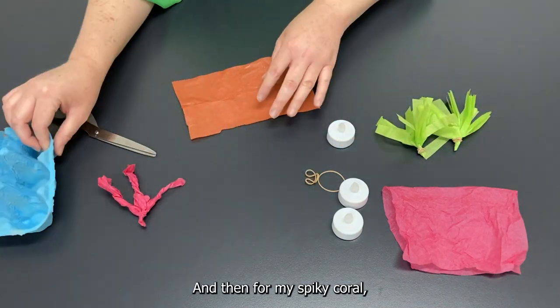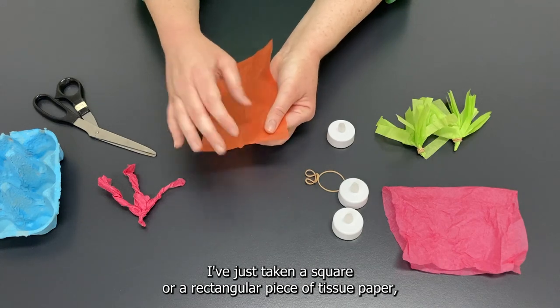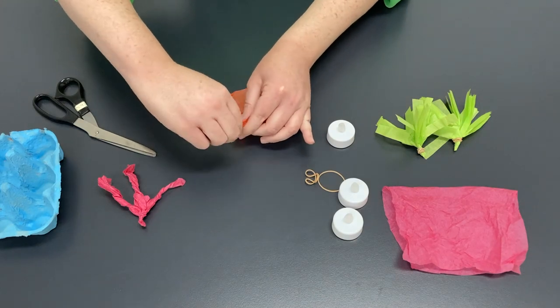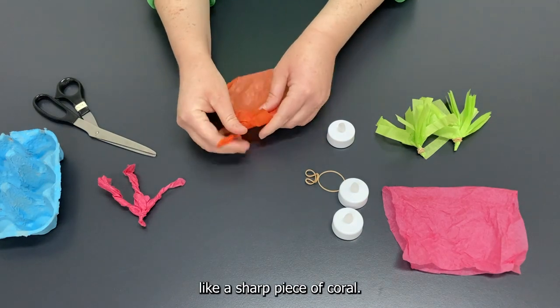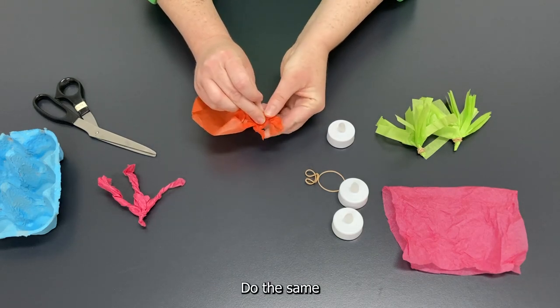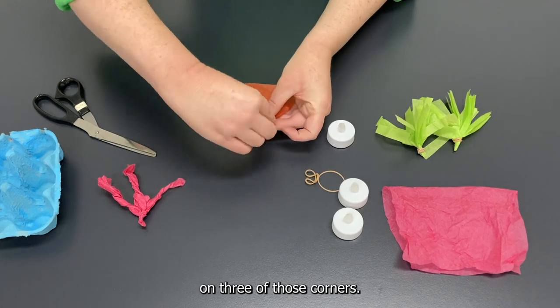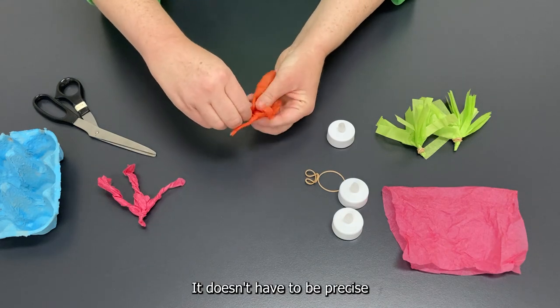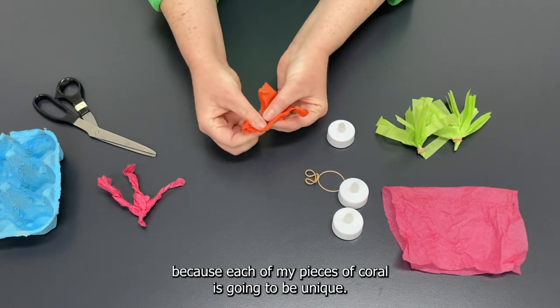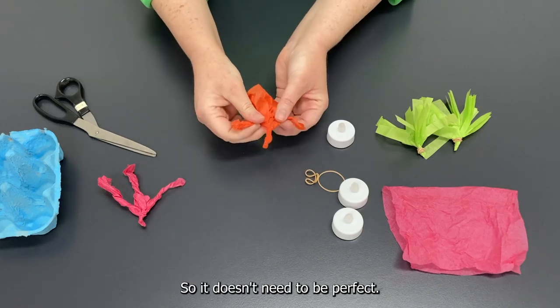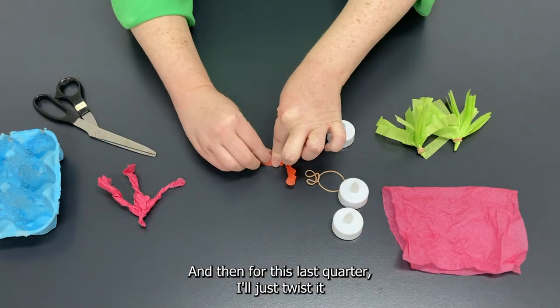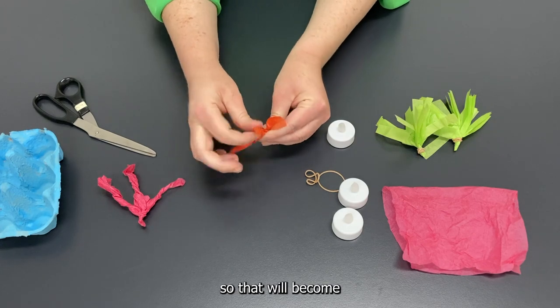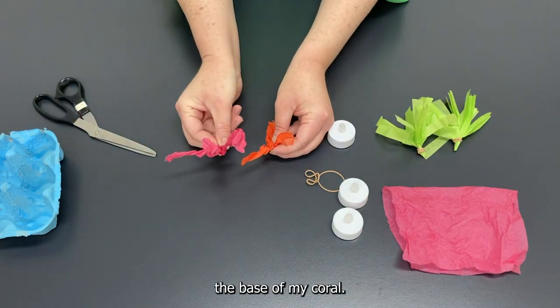And then for my spiky coral I've just taken a square or a rectangular piece of tissue paper and then I'm kind of just twisting every corner. So twist it in to sort of look like a sharp piece of coral. Do the same on three of those corners. And then for this last corner I'll just twist it in the different direction, fold it up a little bit so that will become the base of my coral.